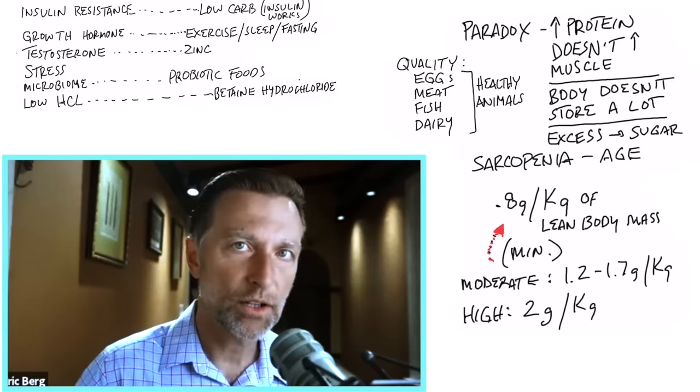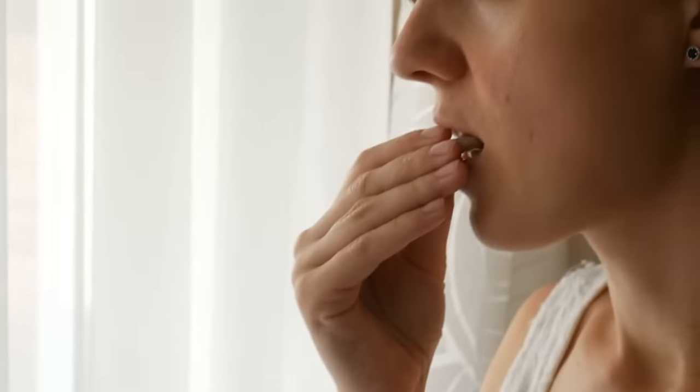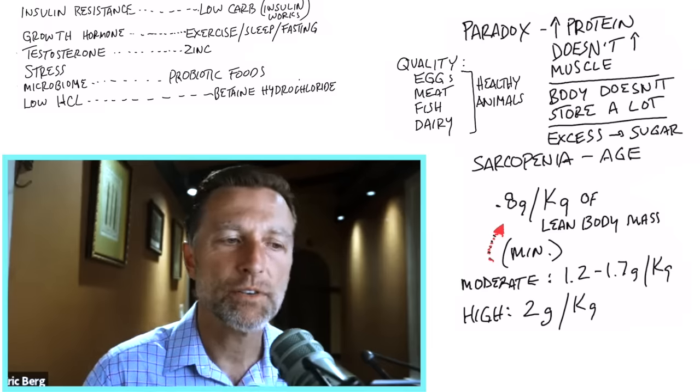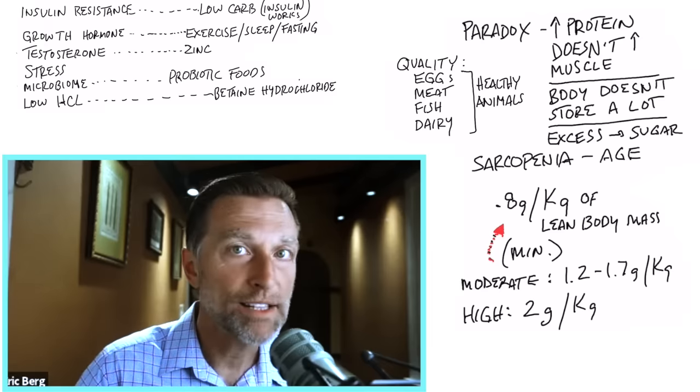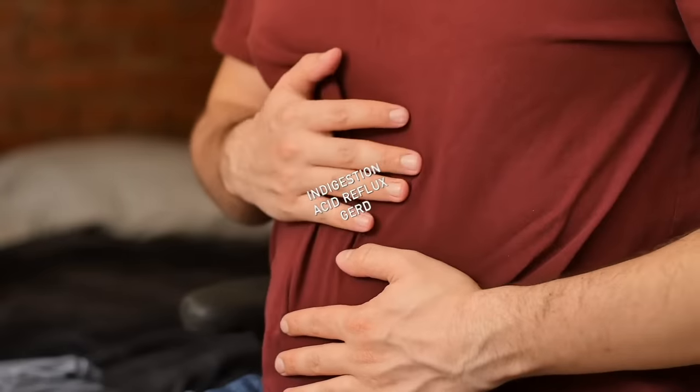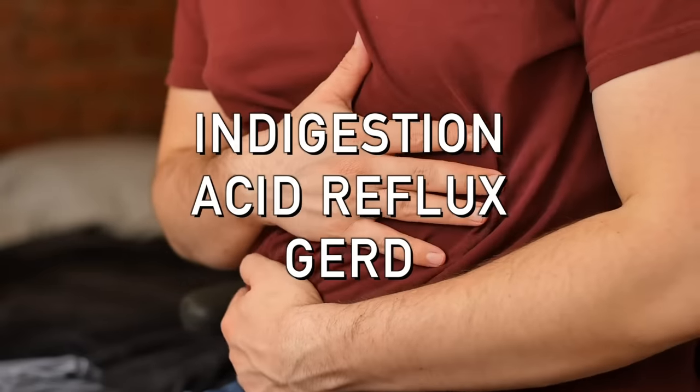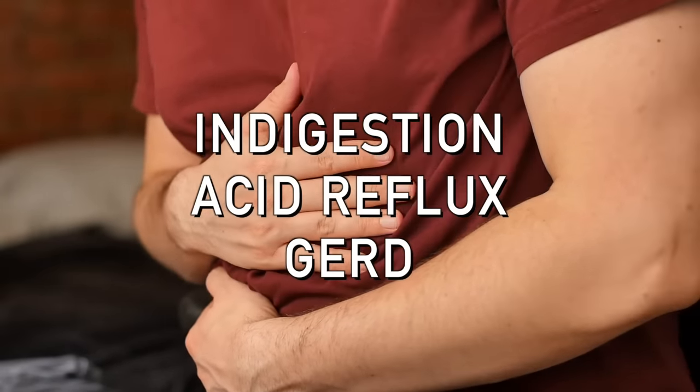So you need to start to support that so you get the full breakdown of amino acids. So betaine hydrochloride is a really good thing to start taking with your meals to enhance the amino acids into the muscle. How do you know if you have a problem or deficiency of hydrochloric acid? Well, one way is indigestion or acid reflux or GERD. If you have that, you should watch the link down below.